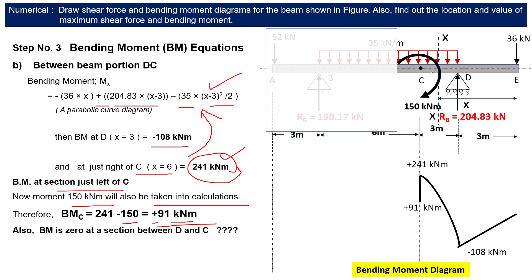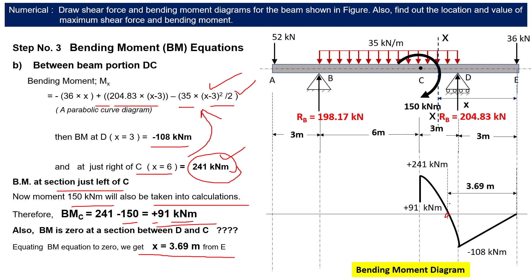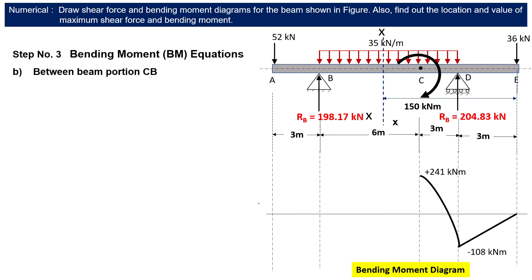Between D and C, the bending moment changes from minus 108 to plus 241, so it crosses zero somewhere. Equating the bending moment equation to zero gives x equal to 3.69 meter from E — this is the first point of contraflexure where bending moment changes sign.